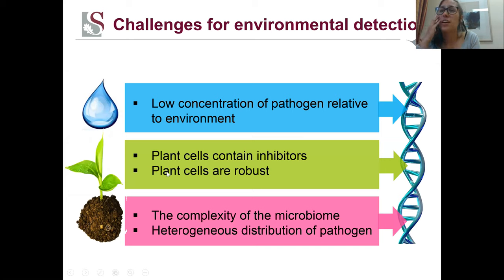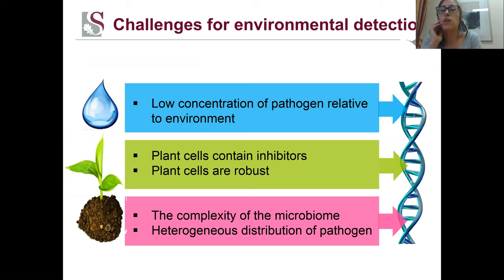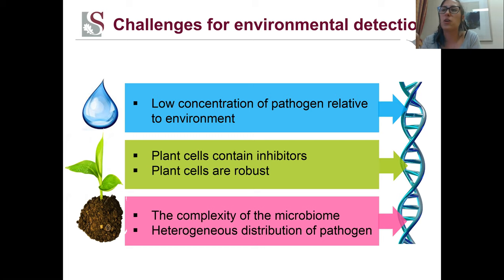I just want to talk about the challenges of environmental detection, because it's not always the easiest. Different environments naturally have some challenges associated with them. For water, there's currently no publication where they quantify FOC from water — it's quite difficult because it's obviously a very large volume, such as a dam, and you've got a tiny bit of pathogen inoculum dispersed. So the way that you sample that water has to be very efficient to actually get enough of the pathogen to give a result. For plant material, it's not too difficult, but that's because normally we only sample from an infected plant with very clear symptoms, to make sure it's actually going to have a pathogen in it. We're not confident yet that we can just take any plant without symptoms and figure out if it's infected.